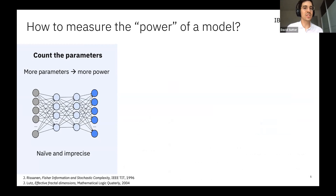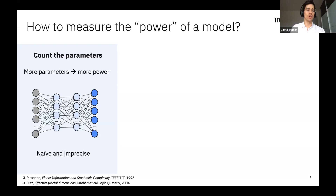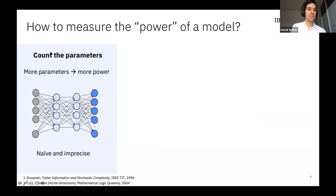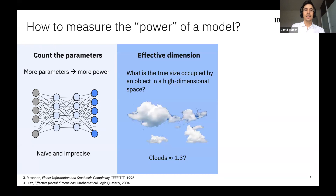To understand whether quantum models have interesting properties, we need to mathematically quantify the power, expressibility, or capacity of a model. The very naive approach is to just count the number of parameters and conclude that models with more parameters are more powerful. But this is extremely naive and even wrong — you could design a classical neural network where certain parameters are redundant, so adding them increases the count but the model doesn't get more powerful. Counting parameters is naive and imprecise.